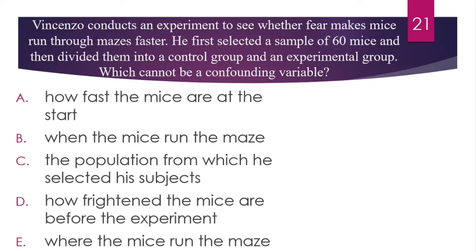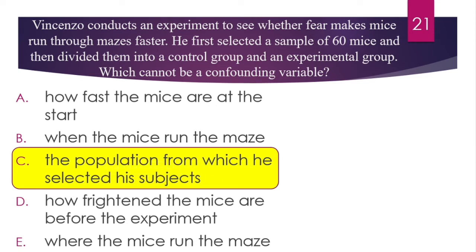Question number 21. When Kenzo conducts an experiment to see whether fear makes mice run through mazes faster, he first selects a sample of 60 mice and then divides them into a control group and an experimental group. Which cannot be a confounding variable? The answer is C — the population from which he selected his subjects. The population itself is not a confounding variable; confounding variables are factors that differ between conditions and could affect results.